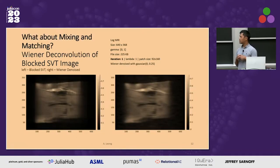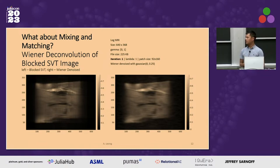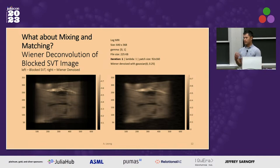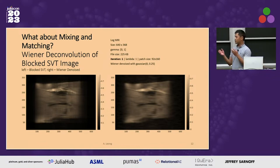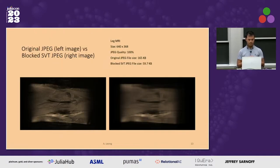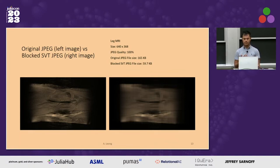Julia has other libraries that you can perform signal processing on an image. If you know the noise distribution of the MRI machine — if a priori it's Gaussian or Poisson or some other noise distribution — you can try to extract the noise out from the image by performing Wiener deconvolution. You can mix and match these techniques. Julia also has a library that allows you to save that image as a JPEG and apply compressed sensing on top of that JPEG image to reduce the file size further.